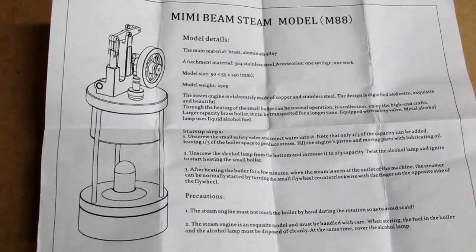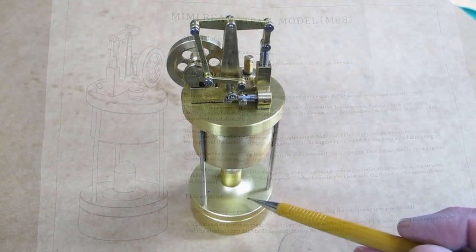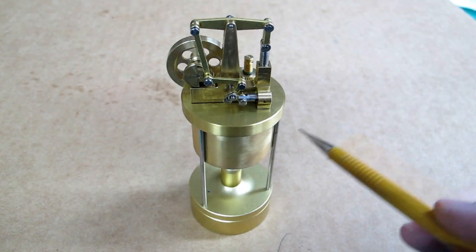Mini Beam Steam Model M88 by Microcosm. You have the alcohol burner down here. This is the boiler.